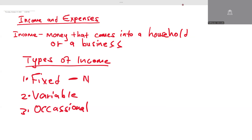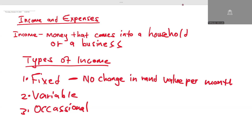Fixed income has no change in rand value per month. This means the money remains the same — if you received 700 this month, you will also receive 700 next month. An example of this would be a salary, because you receive the same amount each month.